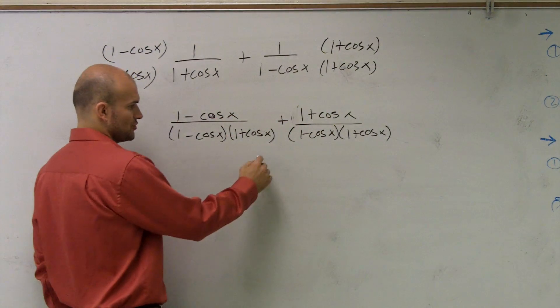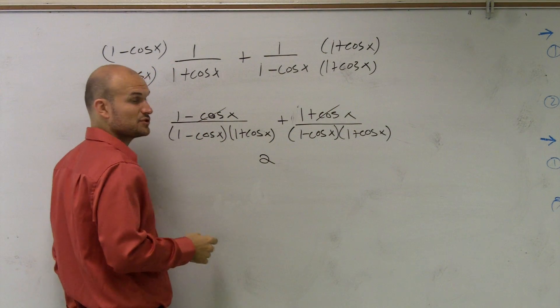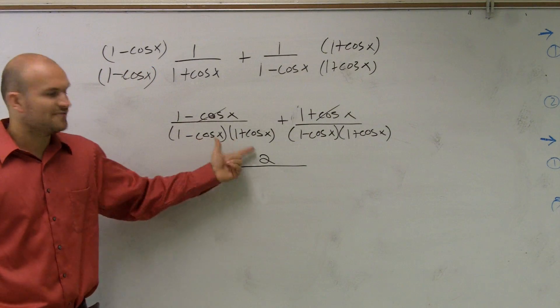1 plus 1 gives me 2. Negative cosine plus the cosine is going to cancel out. So I'm just left with 2 on top, over I have this.